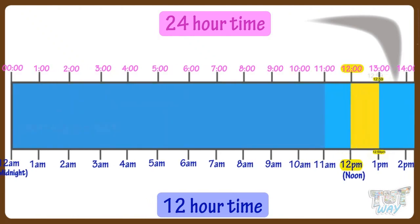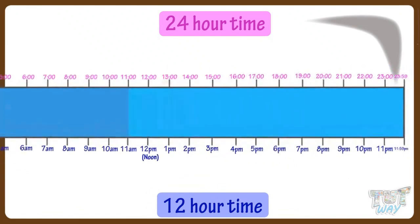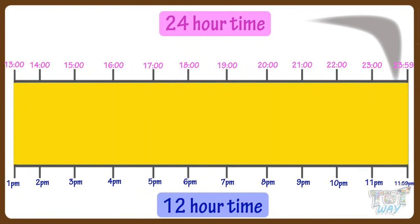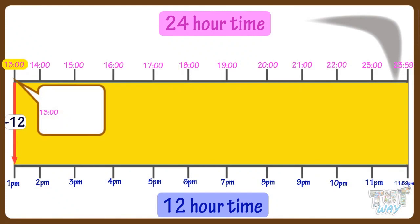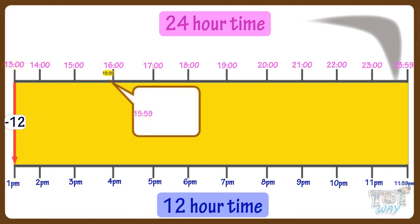12 to 12:59 in the 24-hour clock system is a straight conversion to p.m.: 12 noon is 12 p.m., 12:05 is 12:05 p.m., and 12:35 is 12:35 p.m. Between 13 and 23:59, we subtract 12 hours to get the time in p.m. If it's 13, subtract 12 to get 1 p.m. If the time is 15:59, subtract 12 to get 3:59 p.m.